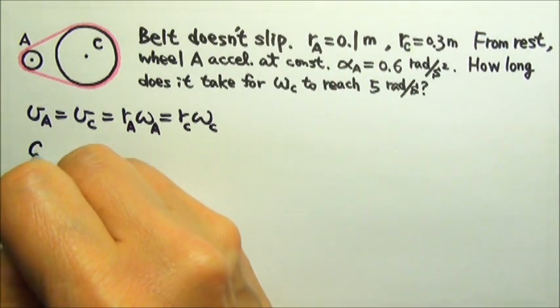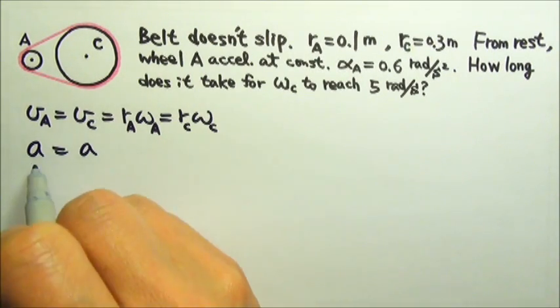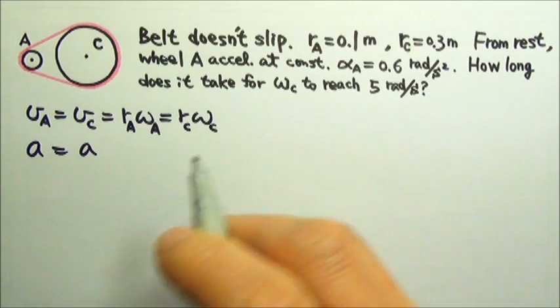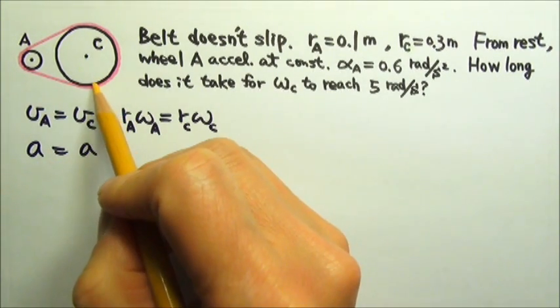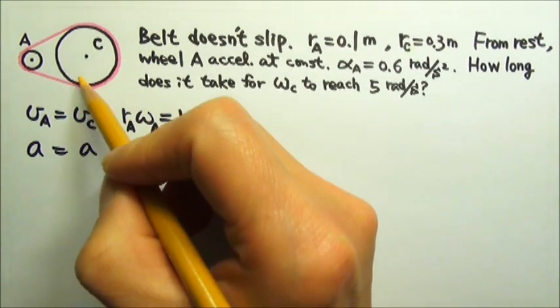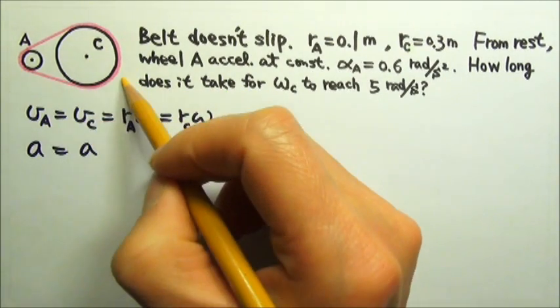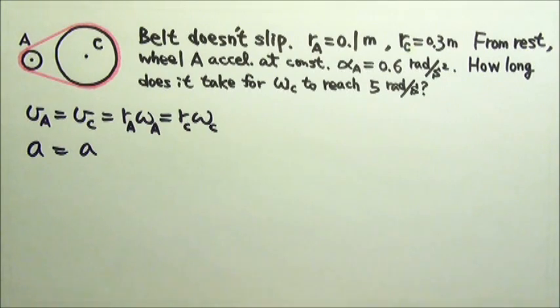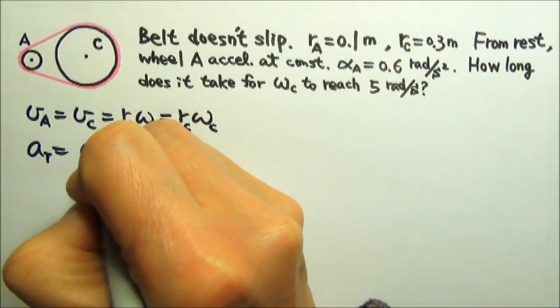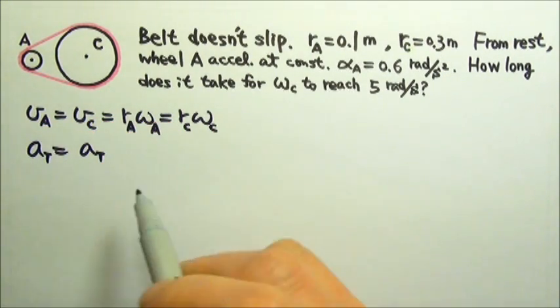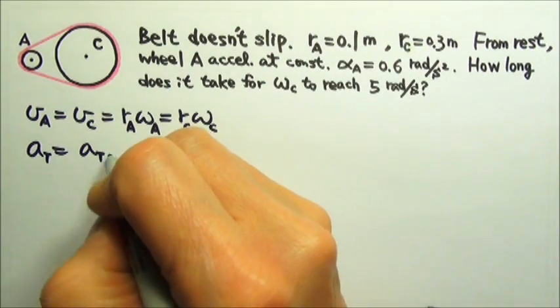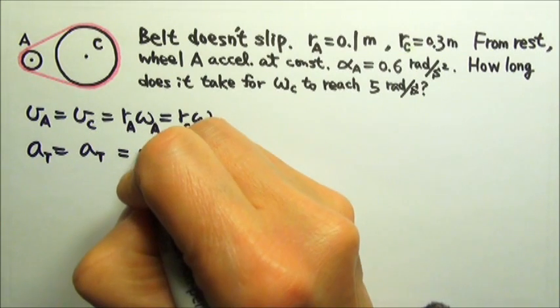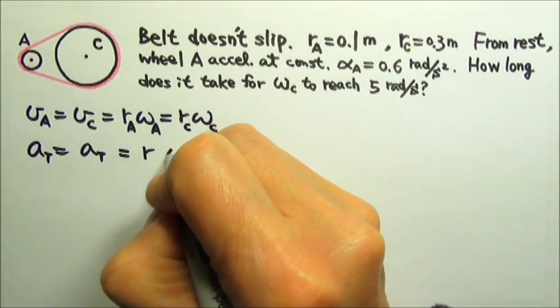But they would have the same acceleration. This is the acceleration that's related to the alpha. It's the acceleration that's related to the belt's acceleration. And since the belt goes around tangent to the circle, this is the tangential acceleration. The tangential acceleration, the one that's responsible for speed change, is R times alpha.